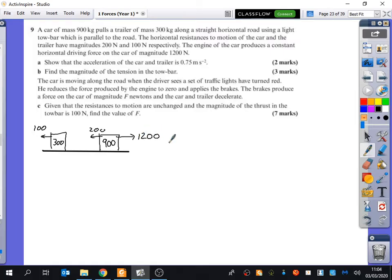We're going to try and show that the acceleration is 0.75. At the moment, we know it's accelerating this way. What should these arrows look like? Should they be pointing in towards each other or pushing out to the car and the trailer? They should be going pulling inwards like this. What do we call this one? Is it tension or thrust? It's tension, because it's accelerating towards the right.